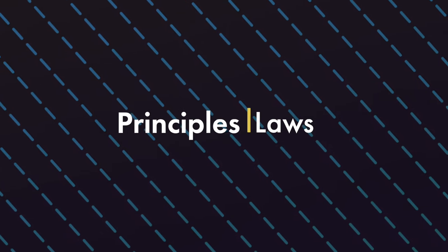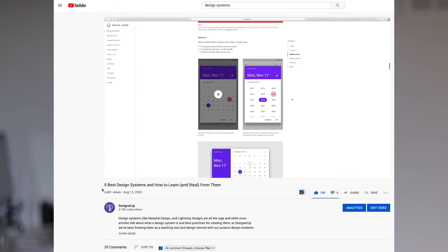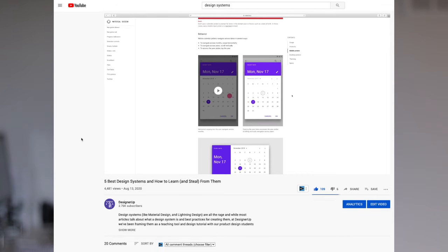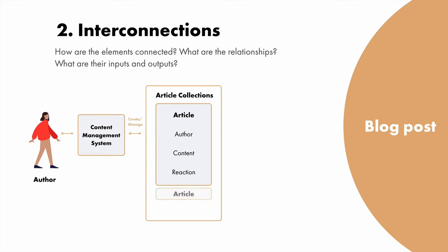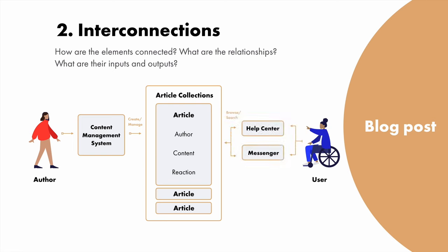Learning design principles and laws is key. A great way to do this is by studying design systems — I've done a video all about how to artfully learn from and steal from design systems. Also, get familiar with conditionals and how code works. That doesn't mean you have to learn HTML and CSS, but it does mean gaining a general understanding of how inputs, outputs, and system interactions work on the platforms you're using, whether that's a web browser or a mobile application. One great way to do this is to share your designs with a developer and just ask them to pick it apart — you'll learn a lot about how systems work.